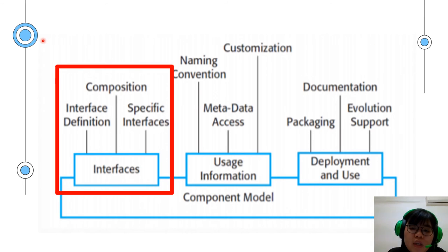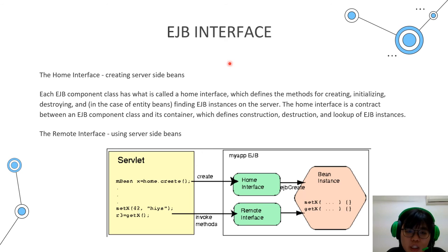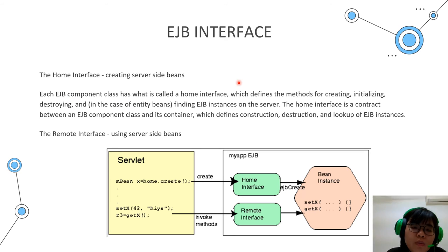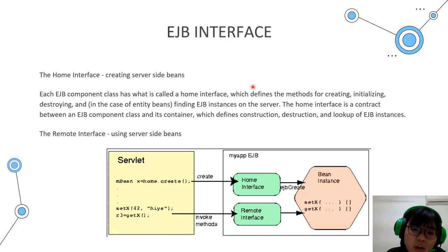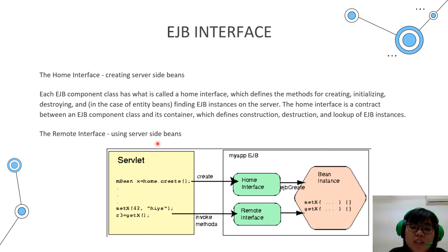Now we introduce the component model elements of EJB. The first element is the interface. There are two interfaces in EJB: the home interface and the remote interface. The home interface defines the methods for creating, initializing, and — in the case of entity beans — finding EJB instances on the server. In summary, the home interface is for creating server-side beans, while the remote interface is for using them. The picture shows the home interface creating the bean and the remote interface using it.